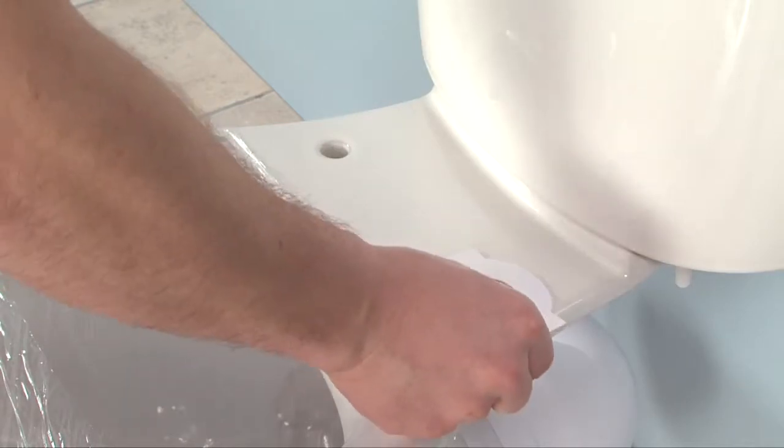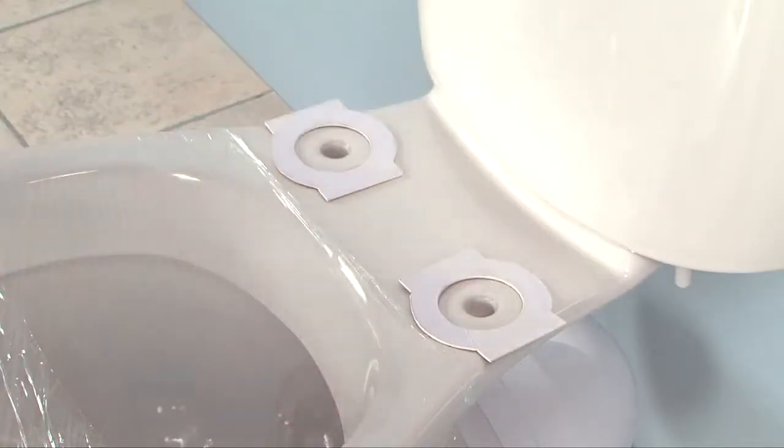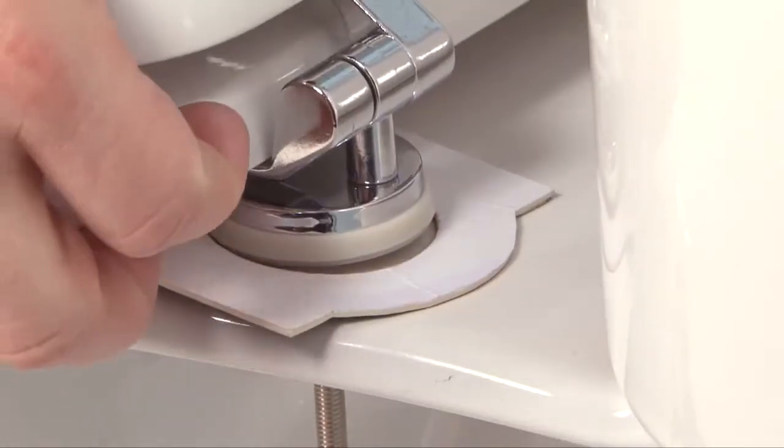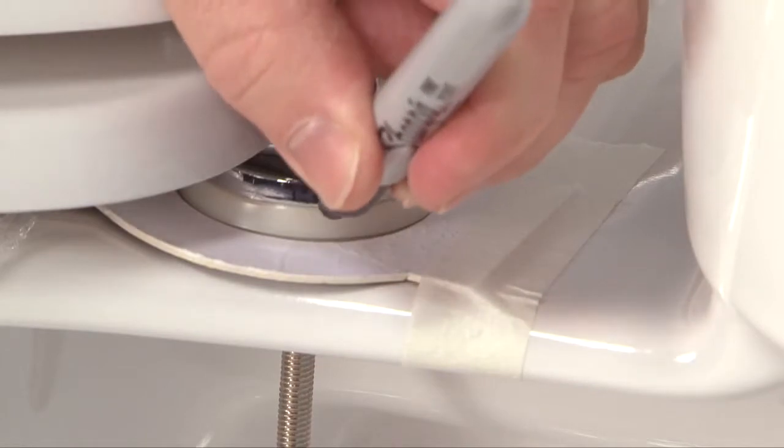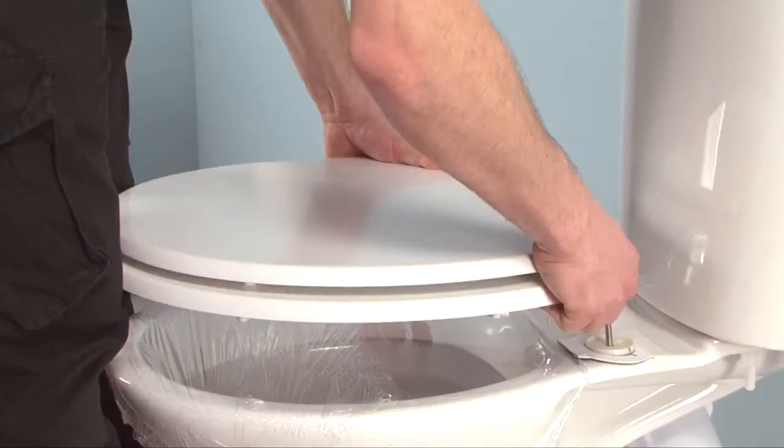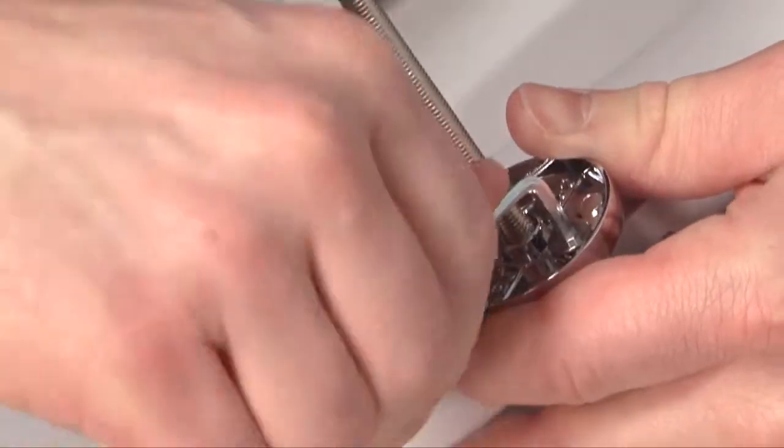Place the templates over the fixing holes. Stick in place and mark the position of the hinges on the templates. Remove the toilet seat and tighten the hinges.